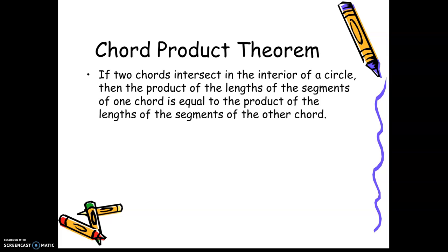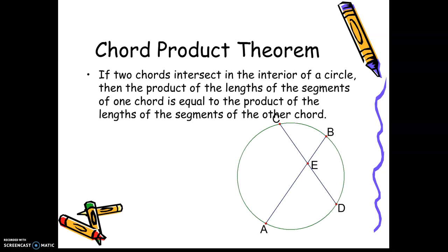Your first theorem is when you have two chords intersecting in the interior of a circle. The product of the lengths of one chord is equal to the product of the lengths of the other chord. So in this case, it's going to be EA times EB equal to EC times ED. The easiest way to remember that one: part times part equals part times part.